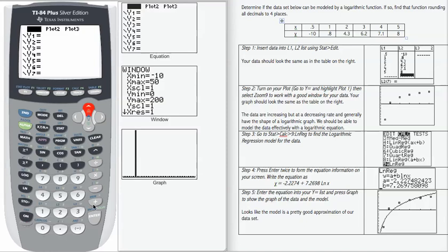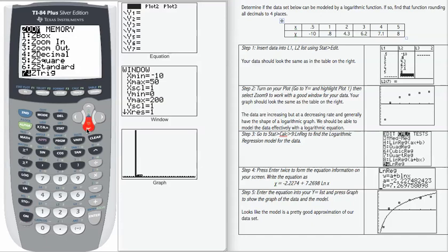I'm going to scroll up and I'm going to hit enter. And if I scroll back down, notice that plot 1 is highlighted. Then I'm going to go to zoom and zoom 9 is zoom stat. So let's go down to zoom 9 and see what that looks like.